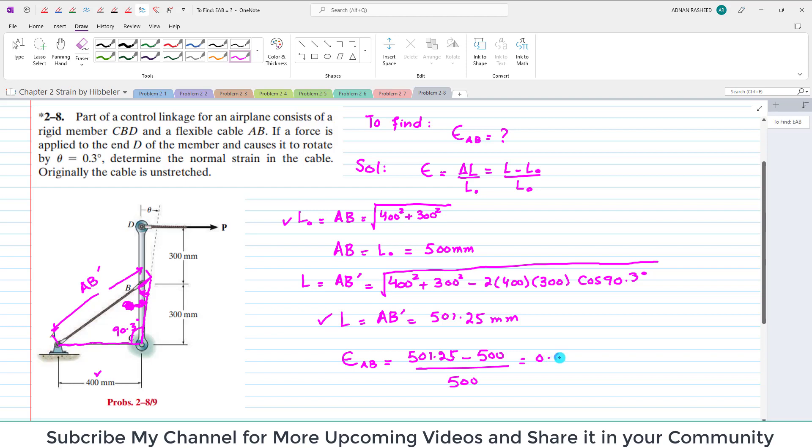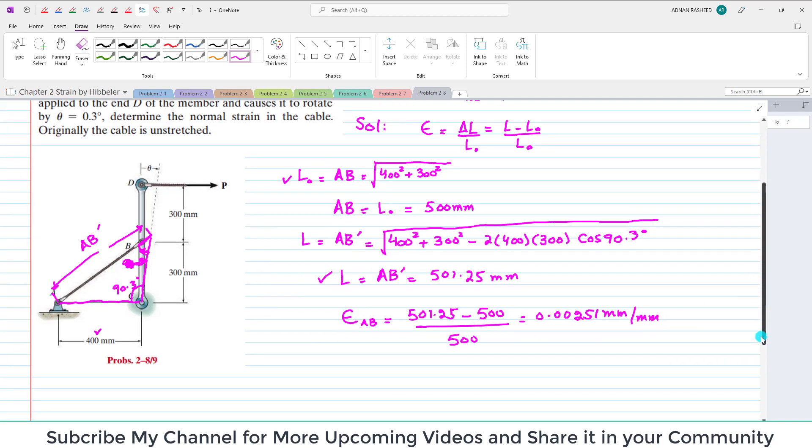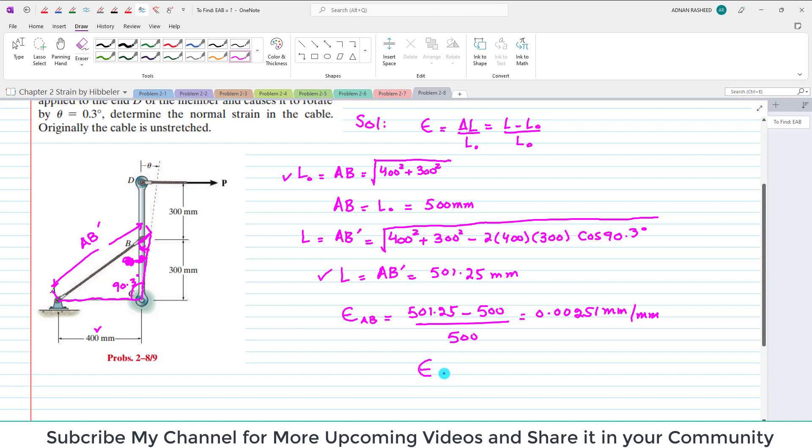When you solve it, you will get 0.00251 millimeters per millimeter. Or you can say that the average normal strain in wire AB is equal to 0.00251.